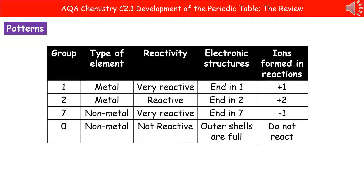Here's a handy table to remember for four key groups: group one, two, seven, and zero. On the left-hand side of the periodic table we have metals; the right-hand side are non-metals — so groups one and two are metals, and groups seven and zero are non-metals. In terms of reactivity, group one is very reactive, group seven is very reactive, group two is reactive, and group zero is not reactive at all. For electronic structures: group one ends in a one (one electron in the outer shell), group two ends in a two, group seven ends in a seven, and group zero has full outer shells. For ions: group one makes a +1 ion, group two makes +2 ions, group seven makes -1 ions, and group zero doesn't react so makes no ions.